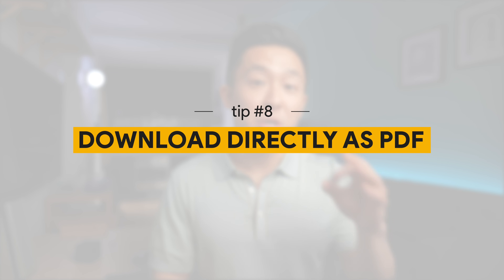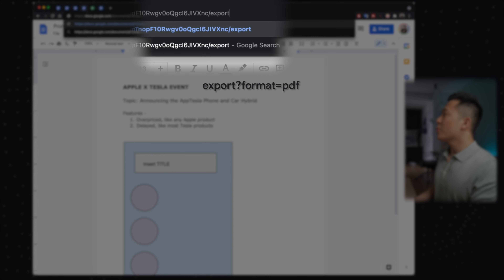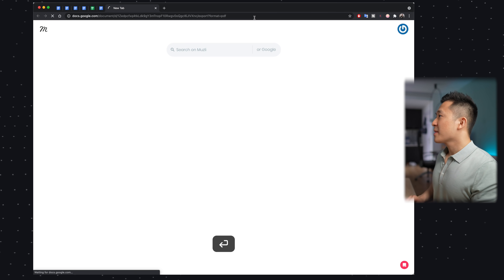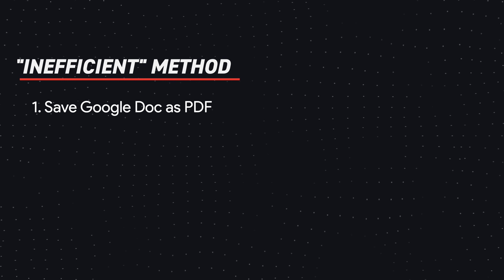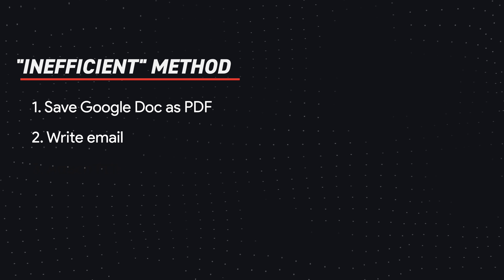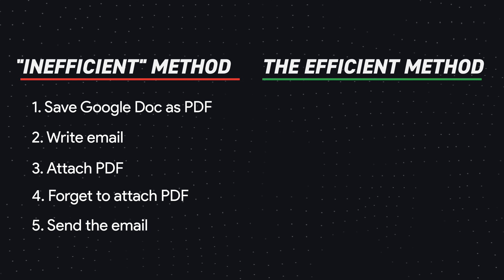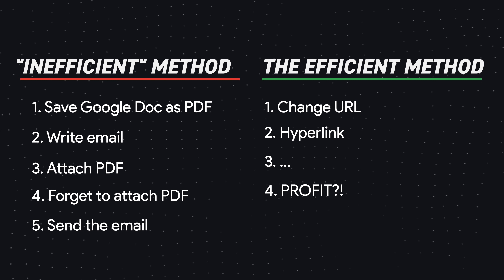Google Doc hack number eight is the last of these link-sharing tips: if you want someone to download your document directly in PDF format, change the last word in the URL to 'export?format=pdf' before sharing. When someone opens this link, they'll download a PDF copy of the document immediately. The manual way is to save as PDF, write the email, attach it, and risk forgetting — whereas the smarter way is simply to change the URL and hyperlink it in the email, so when they click it, the download starts automatically.